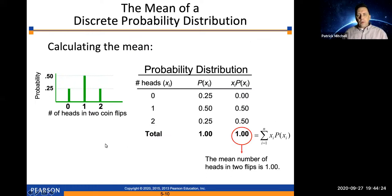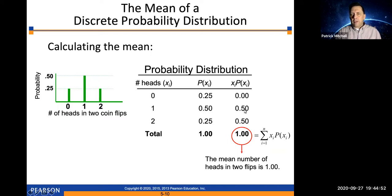For the coin toss experiment, the possible values of the random variable were 0, 1, and 2, occurring with probabilities 0.25, 0.5, and 0.25 respectively. So we get: 0 times 0.25 equals 0; 1 times 0.5 equals 0.5; 2 times 0.25 equals 0.5. Adding those values together gives the mean or expected value: 1. What that means is if you were to do this experiment many many times, the average number of heads in two tosses is 1, which makes sense.